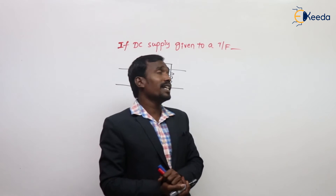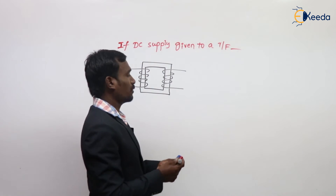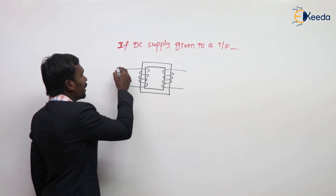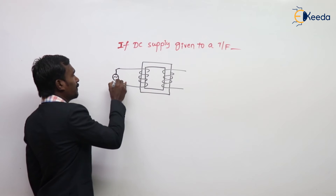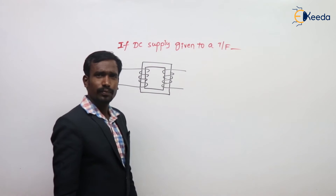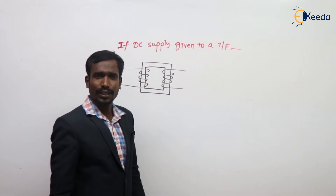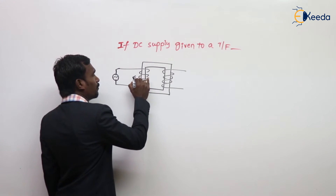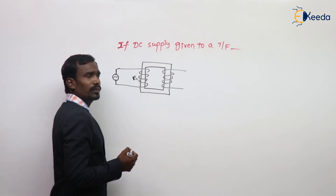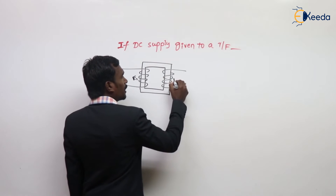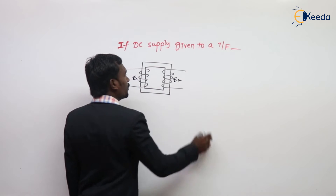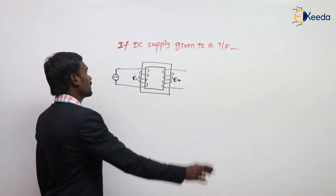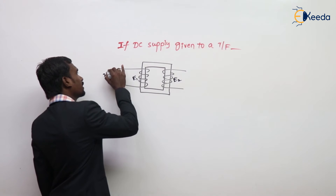Now, if DC supply is given to a transformer, then what happens? Some students might say some EMF will be induced in the winding — but that is not correct. Let me explain.